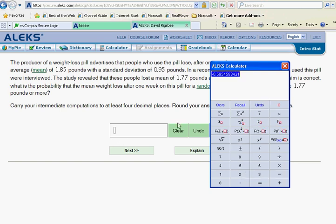Our z-score that we come up with here is negative 0.595. Notice they want intermediate computations to four places, so negative 0.5954.